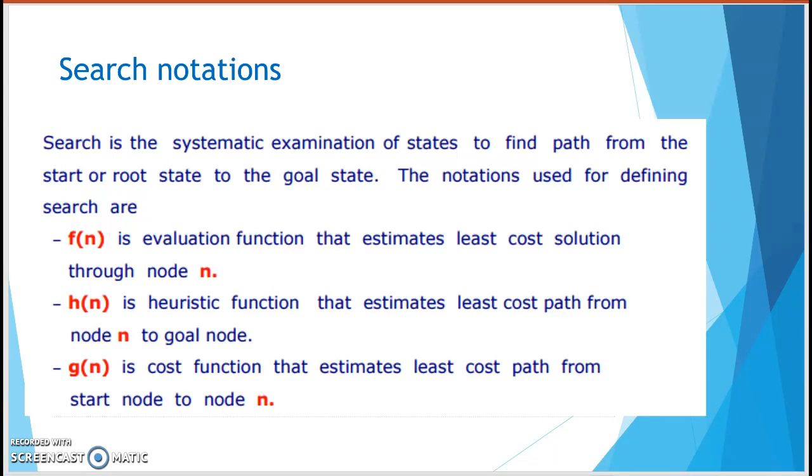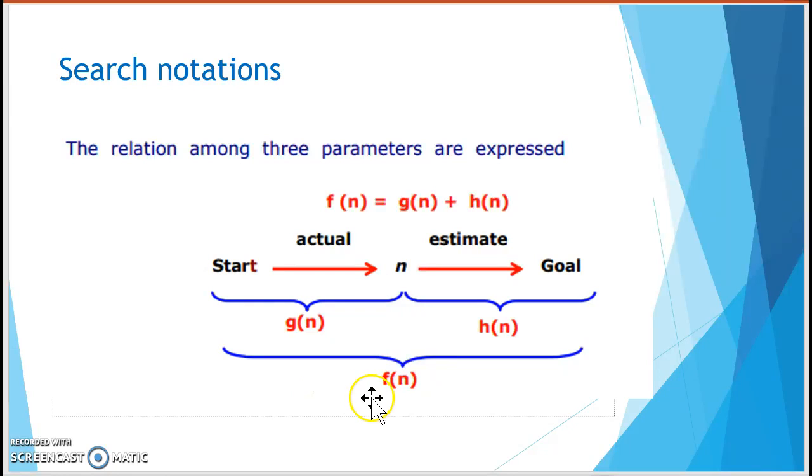So how to write the search notation? Basically, we have this 3 important notation, which is the FN, the function that estimate the cost solution. The HN, that is a heuristic function that estimate the least cost path from node N to goal node. And GN is a cost function that estimates the least cost path from the start node to N. So if you can see that FN is from starting node to goal node. HN from the middle to goal. And GN is from the starting to N.